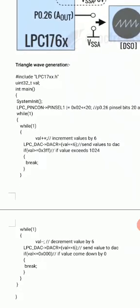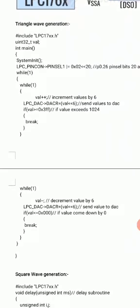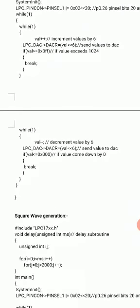We check whether the value has reached the maximum, which is 1024, because the LPC1768 has a 10-bit DAC — 2 raised to 10 equals 1024. Once it reaches 1024, it breaks out and enters the next while loop where the value is decremented. By incrementing continuously to the maximum then decrementing back to zero, you generate a triangular waveform, repeating continuously since it is all inside the while loop.